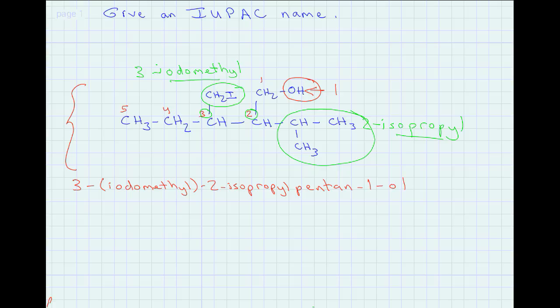That is the IUPAC name for this molecule — it's a long name, but it is correct. The important things to remember: look for the longest carbon chain that includes the hydroxyl group, and start numbering from the end closest to the hydroxyl group. Once we find that chain, carbon one and two give us a substituent — the isopropyl group.